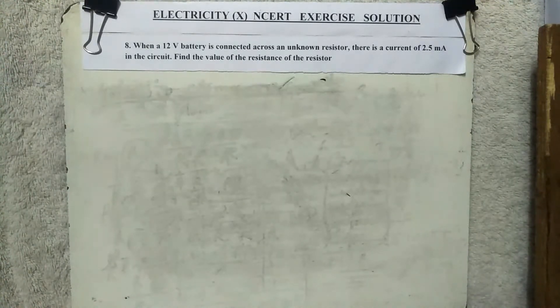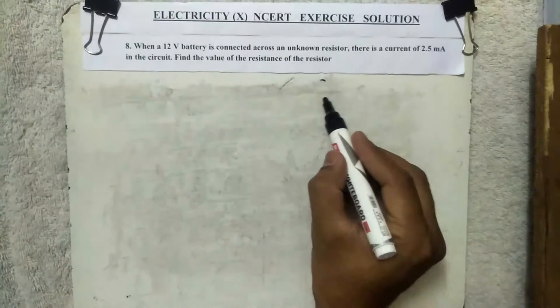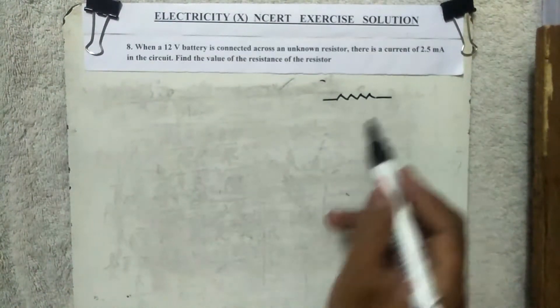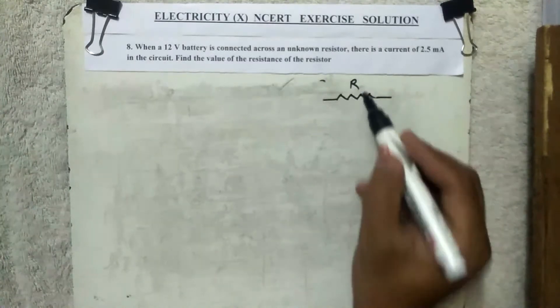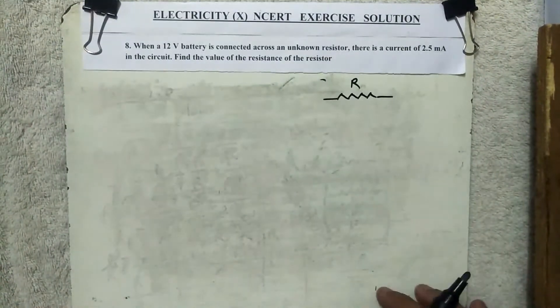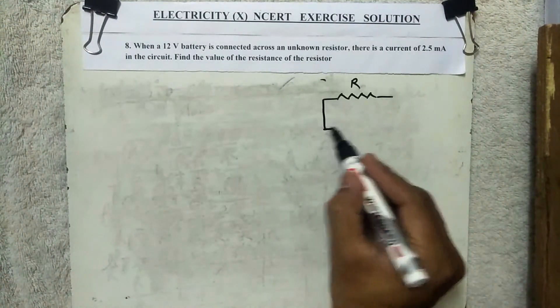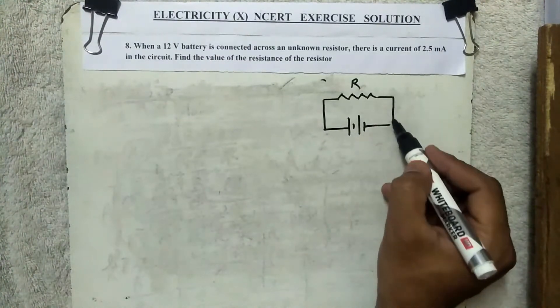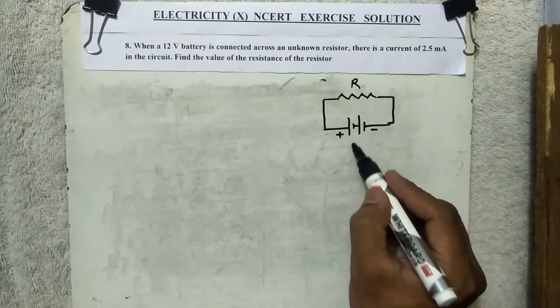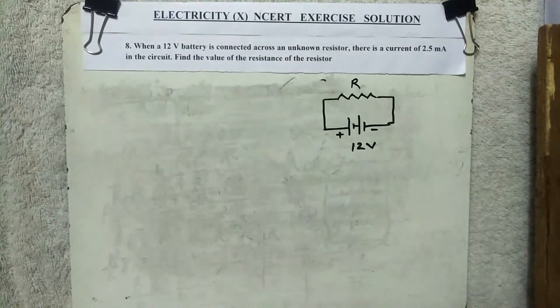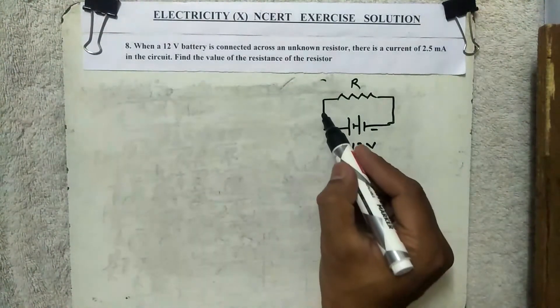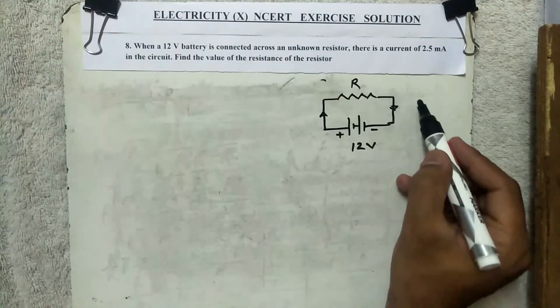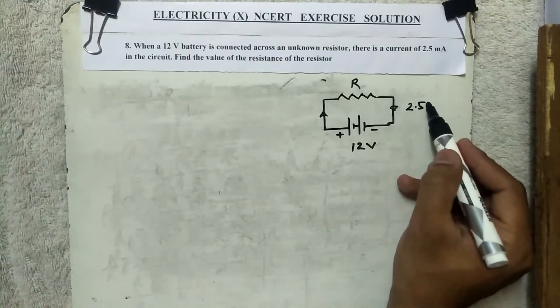When a 12 volt battery is connected across an unknown resistor, okay, so first I am taking an unknown resistor. This is the unknown resistor, this is minus and this is 12 volt. Okay, this is the current, your conventional current is flowing, how much is it? 2.5 milliampere.